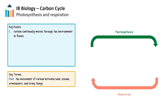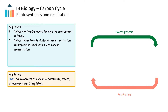Carbon continually moves through the environment in fluxes. Carbon flux refers to the movement or transfer of carbon atoms between different reservoirs or pools within the Earth's carbon cycle. The carbon reservoirs include land, oceans, atmosphere, and living things. Carbon fluxes occur through various pathways, including the processes of photosynthesis and respiration, as well as other processes like decomposition, combustion, and carbon sequestration.